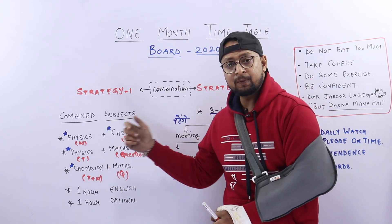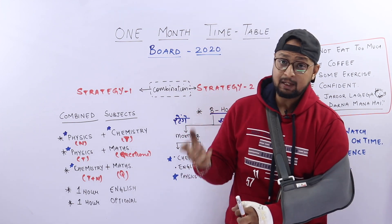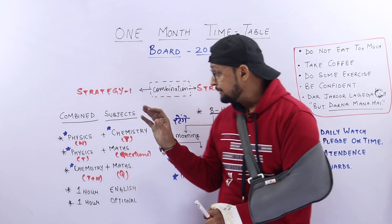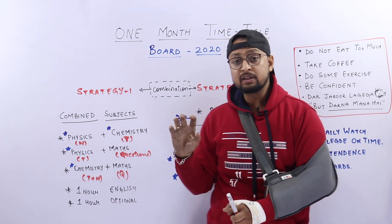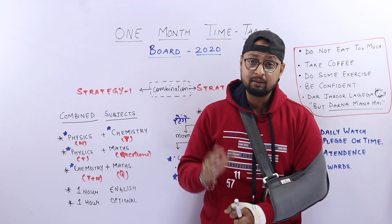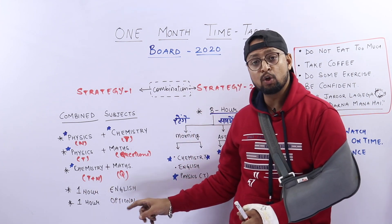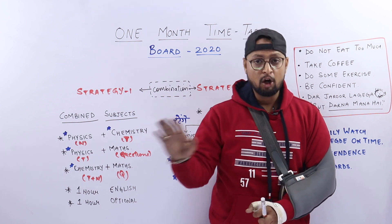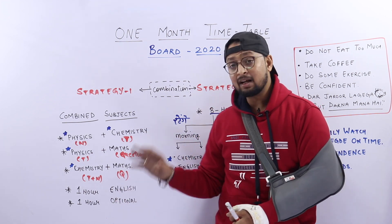I will make a time table. We will make a combination. One hour English is compulsory — we have no option. One hour is optional.